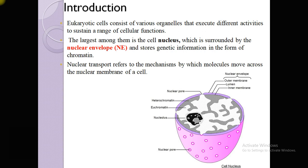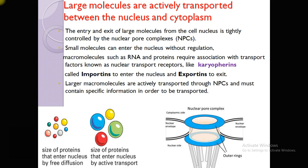The largest organelle is the cell nucleus, which is surrounded by a nuclear envelope containing three parts: outer membrane, lumen, and inner membrane, and stores genetic information in the form of chromatin, heterochromatin, and euchromatin. Nuclear transport refers to the mechanism by which molecules move across the nuclear membrane with the help of nuclear pores. Large molecules are actively transported; small proteins pass through the nuclear pore complex passively without any energy requirement, while macromolecules require a special transport system.